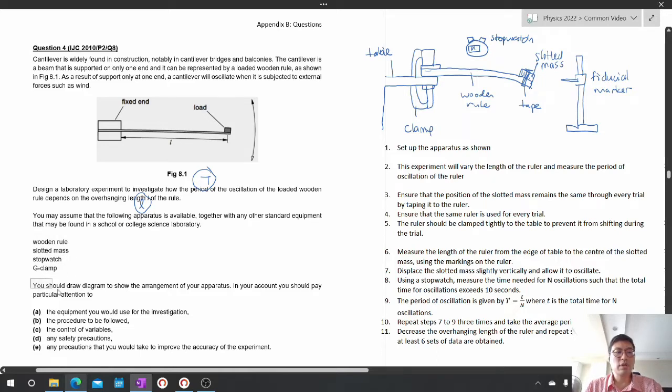We should draw a diagram to show the arrangement of the apparatus. This is the diagram that I've drawn. As you can see I've put a table and then I've attached a G-clamp to hold a wooden ruler and a slotted mass with a tape.